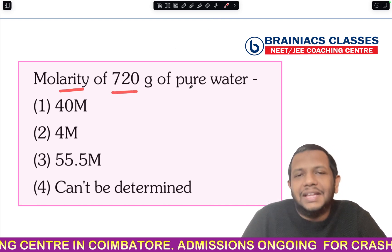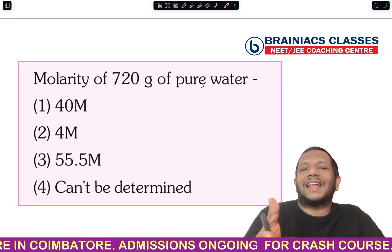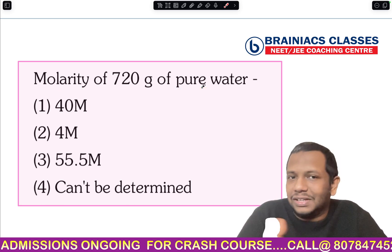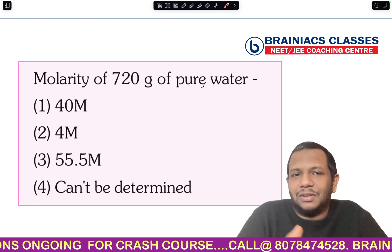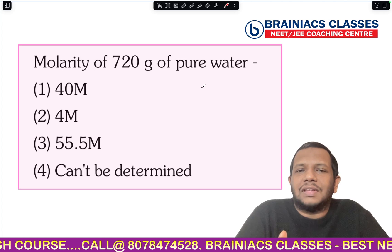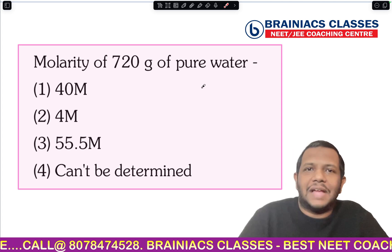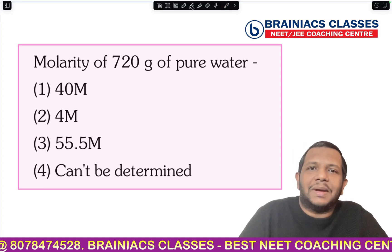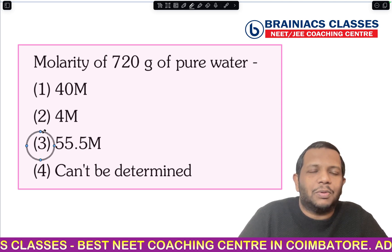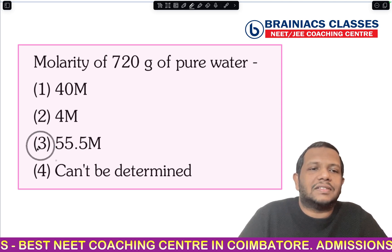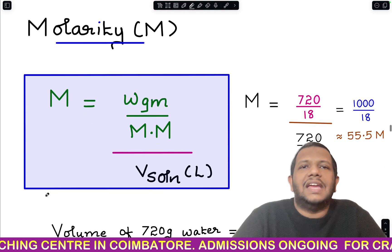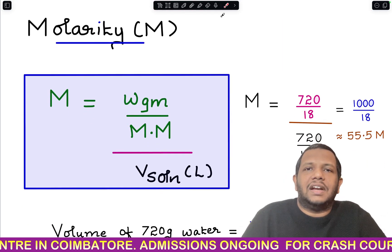The question here is: what is the molarity of 720 grams of pure water? I have given a different mass this time — last time we tried with 1000 grams, now let's try with 720 grams. The answer will not change; it will again be 55.5 M. It is independent of the mass of the pure water, but let's see how that comes.